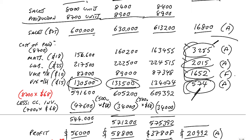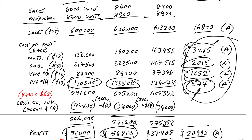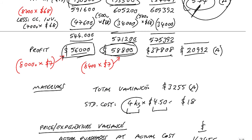Although we've now dealt with all the cost variances, there are of course two other reasons why the profit was different from budget. And we have in fact already worked them out. We budgeted on 56,000. The most obvious reason why we expect the profit here to be higher is because we sold more units. If everything else went perfectly, selling more units would have given us an extra 2,800 profit.